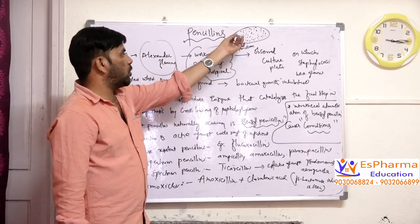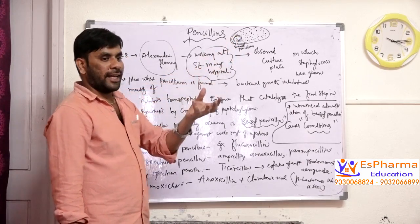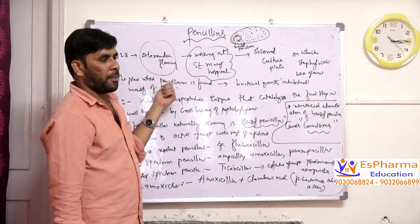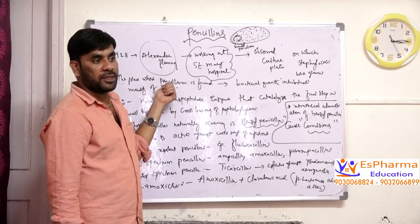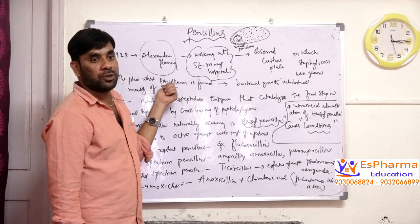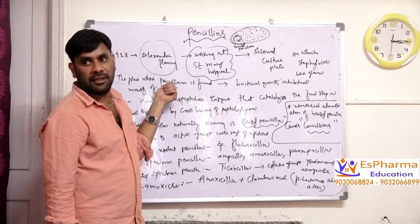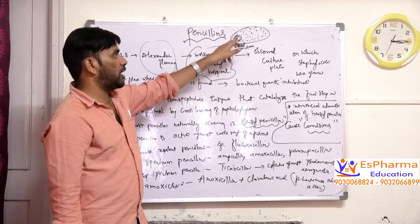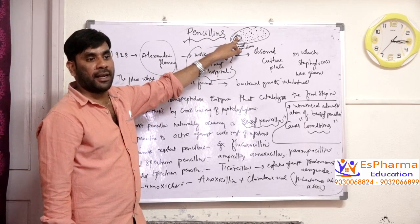So he isolated that mould and extracted one compound called penicillin. He extracted it from the fungus — this mould means fungus — and he came to the conclusion that a fungus will also have some antibacterial activity. From that experiment, he came to know this Penicillium mould has some type of antibacterial activity.